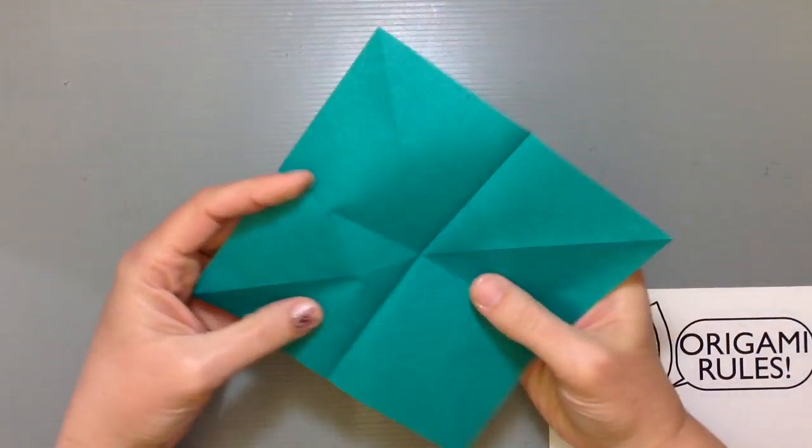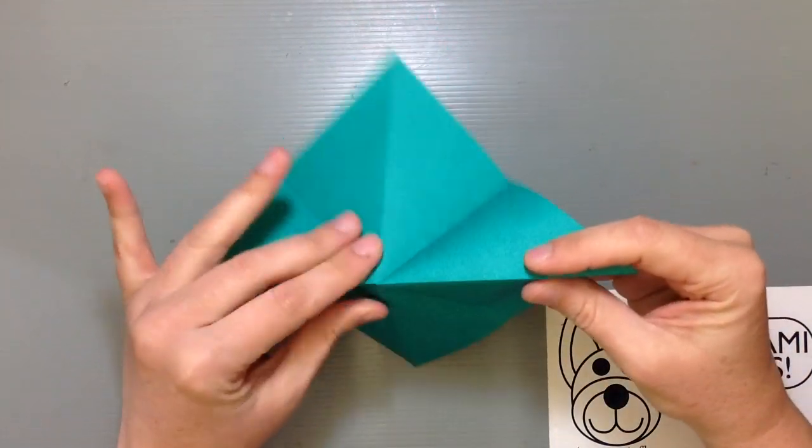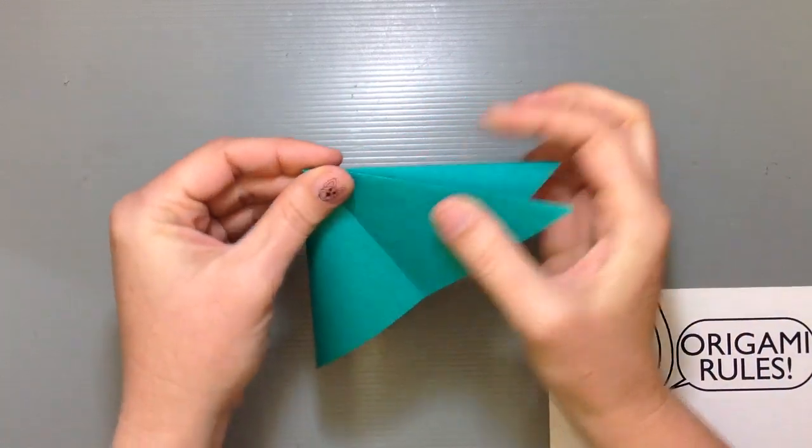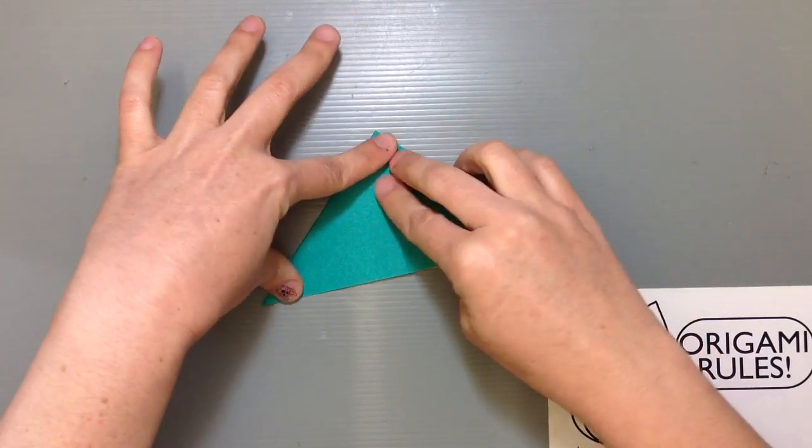Open it up, find those diagonal creases, just pinch in the center there and let all the creases kind of go their natural way as we put a little pressure. And shimmy things around until you can get a nice little triangle here.